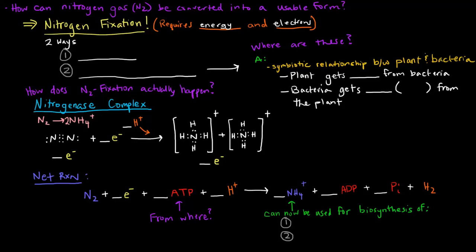There are two ways in which nitrogen can be fixed. The first way is lightning, which basically provides both the energy and the electrons for nitrogen fixation. But nitrogen fixation by lightning is not really too relevant for us.